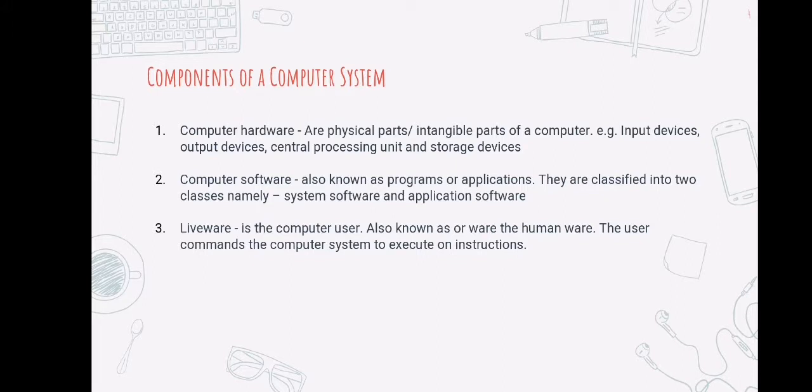And the storage devices which are the hard disk drives, and some of the storage media like CDs, USBs, etc. The second component is the computer software. These are the intangible part of the computer system. They are also known as programs or applications. Computer software are classified into two classes: system software and application software.